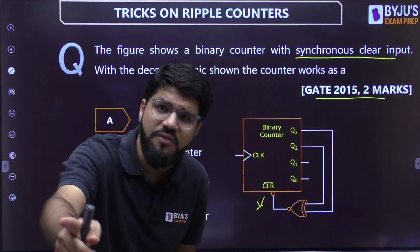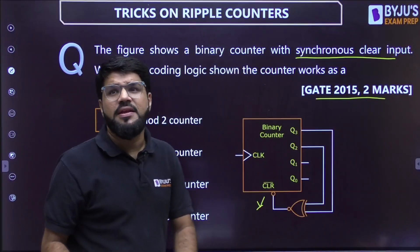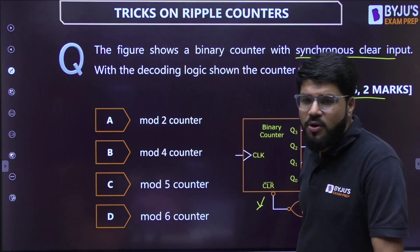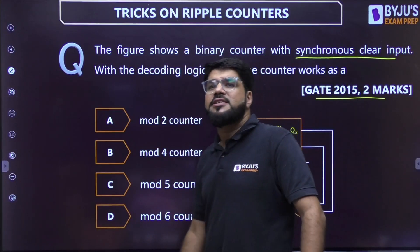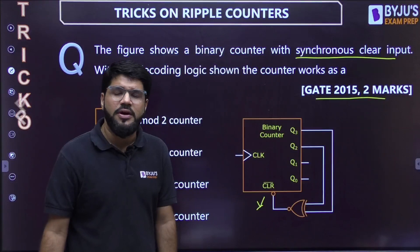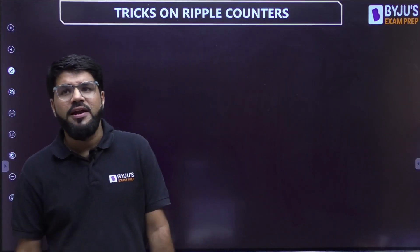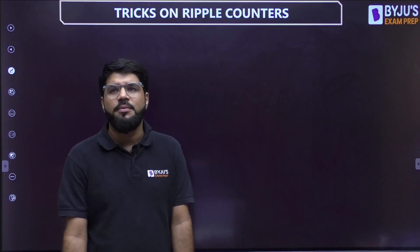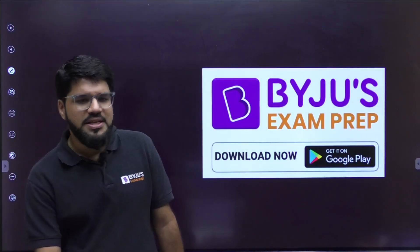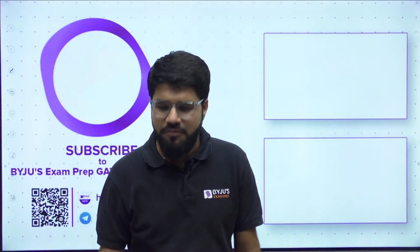As homework, there is a GATE two-marker question with a synchronous active low clear input on a counter. Please solve it and let me know your answer — A, B, C, or D — in the comment box. That's it for this Trickopedia video. I hope you enjoyed it. Don't forget to subscribe to our channel. Bye bye, thank you, stay safe and take care of yourself.